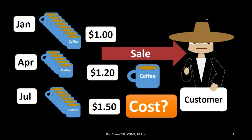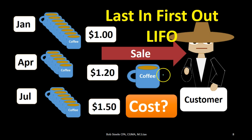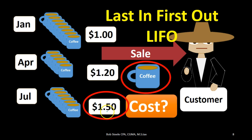We could make a different assumption: under last in first out, we assume the coffee mug sold came from the last batch purchased — the most expensive batch at $1.50. Most people balk at this because we'd normally try to sell the older ones first, but you can make a reasonable argument that it's just as valid an estimate. Why would we want this assumption? In a period of rising prices, LIFO will result in lower net income, which may be desirable for tax purposes. It's a good illustration of how different methods produce different results on the financial statements.